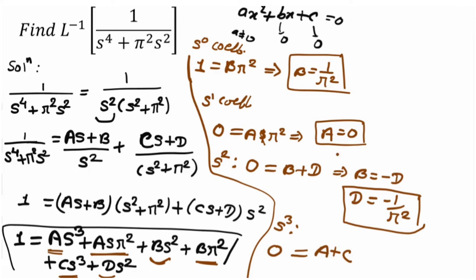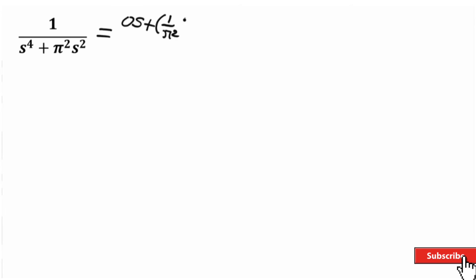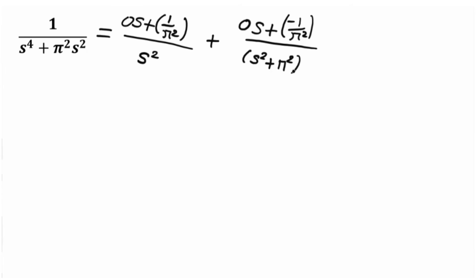Putting the value of A, which is 0, we get C equals 0. So now we have: A equals 0, B equals 1 upon pi squared, C equals 0, D equals minus 1 upon pi squared. The partial fraction form is: 0·s plus (1/pi²) divided by s squared, plus 0·s plus (minus 1/pi²) divided by s squared plus pi squared.